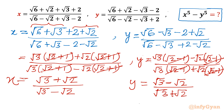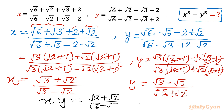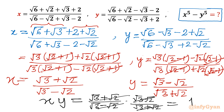Now we can write one equation straight away — the product equation. x times y equals (√3 + √2)/(√3 − √2) times (√3 − √2)/(√3 + √2). Everything cancels from numerator and denominator, so xy = 1.